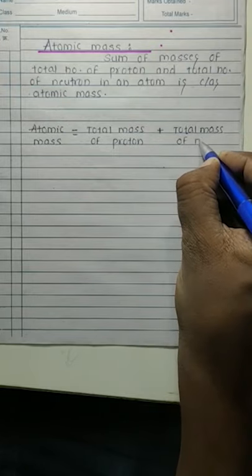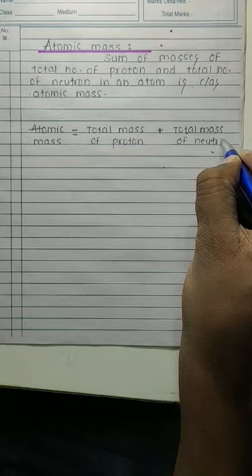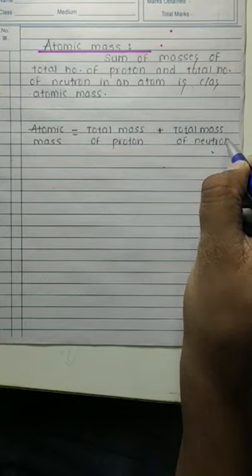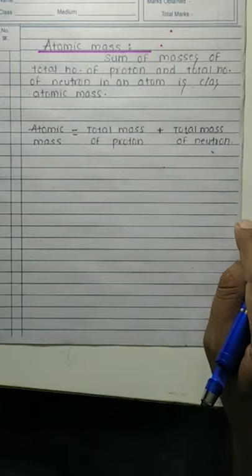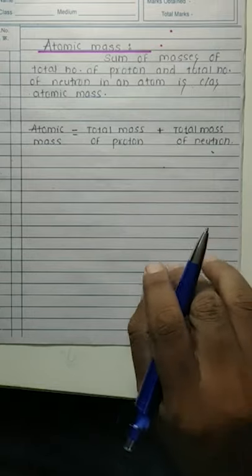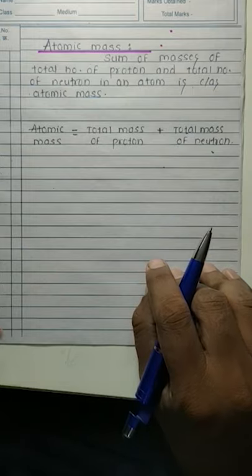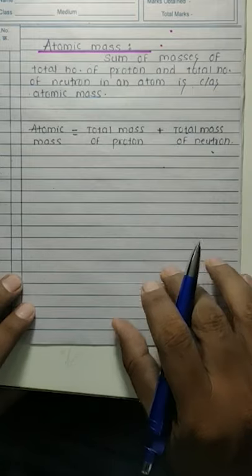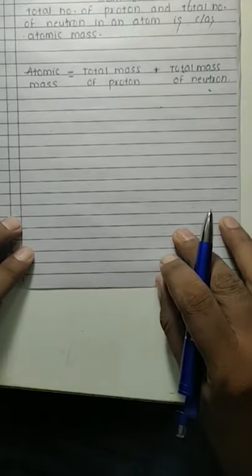Bahut kam logon ko yeh pata hota hai ki atomic mass aur atomic mass number dono alag hain. Atomic mass: total mass of proton plus total mass of neutron.